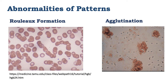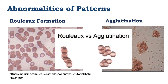Abnormalities of pattern in the smear: we see rouleau formation, where the red blood cells are stacking up on each other like coins, while agglutination is where the red blood cells are clumping together into groups. Agglutination will be seen in more detail when we look at blood grouping.